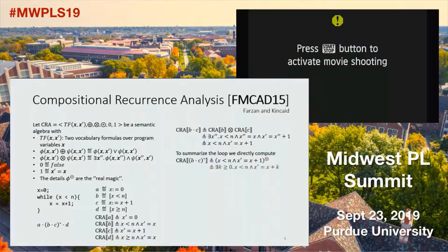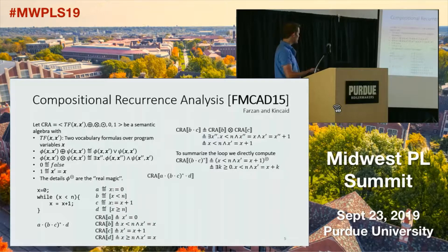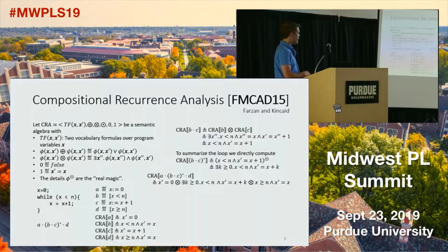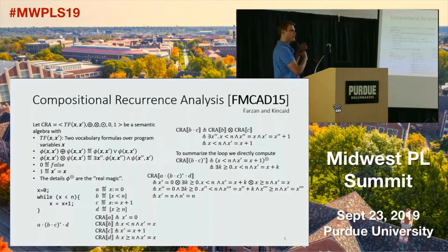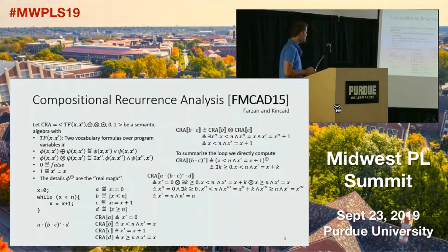For this particular loop, if it iterates k times, the value of x on the kth iteration is just whatever it initially started at plus k, since one is added each time. So the summary introduces an existentially quantified k representing the number of loop iterations, with x less than n and x increased by k. Tacking on the initial value and loop terminating condition, we find k equals n and the final value of x is n. That's the overall summary and the basic structure of CRA.